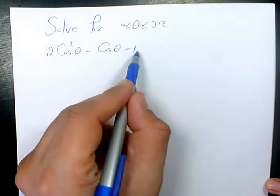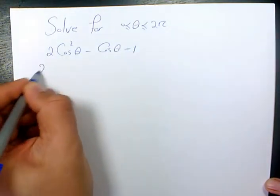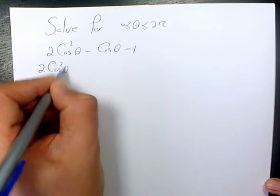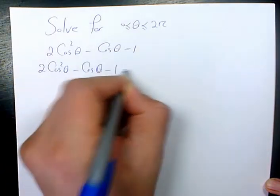So, first thing I do, I need to move this 1 to the left hand side. So, it will be 2 cosine squared theta minus cosine theta minus 1 equals to 0.